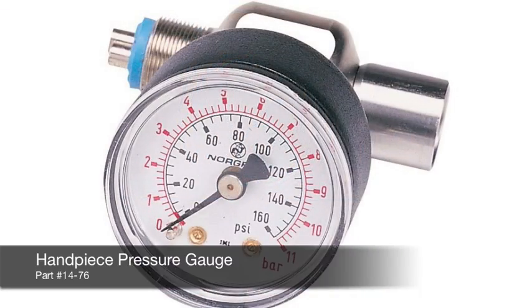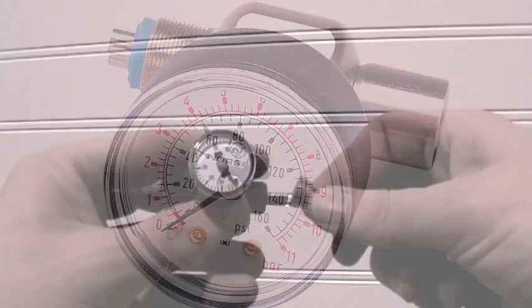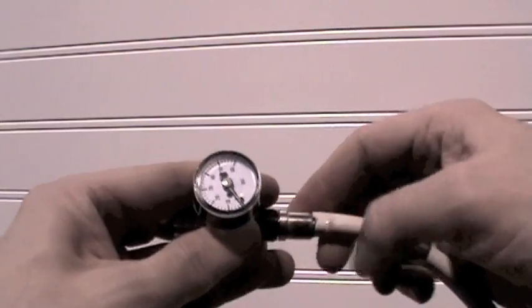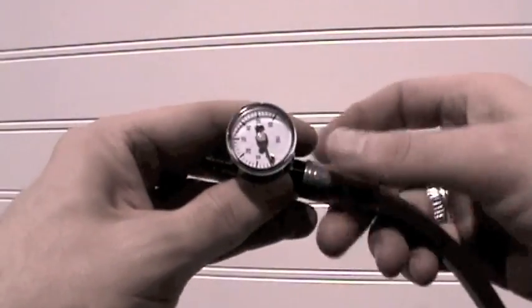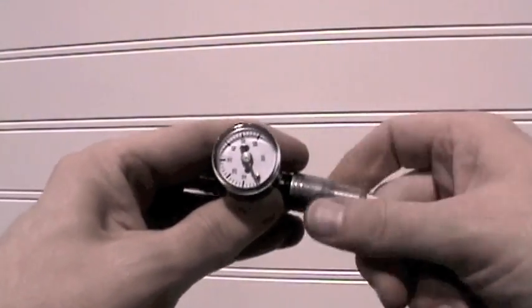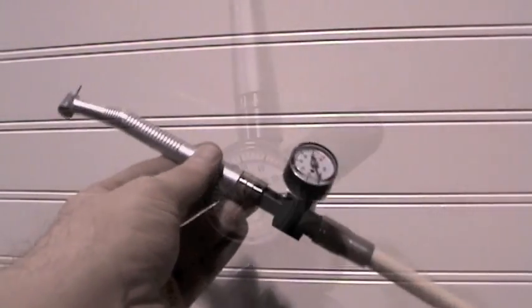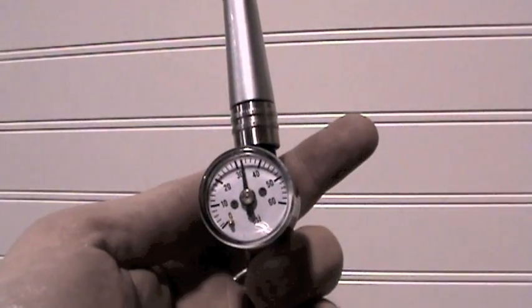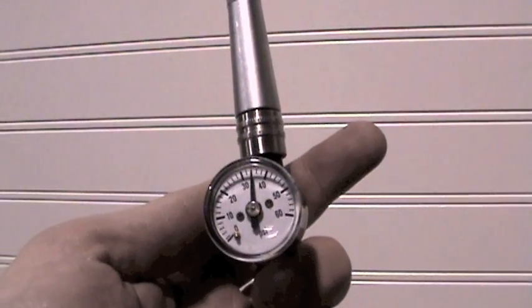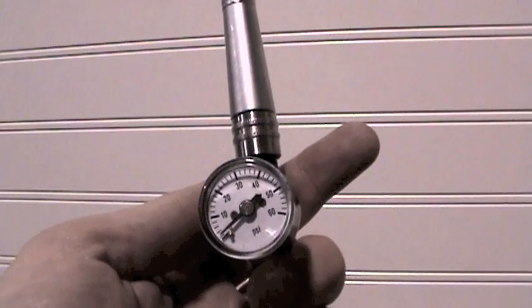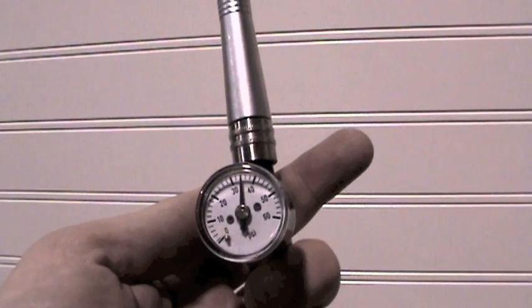In order to verify the pressure that is really coming through the handpiece hose, we suggest using a handpiece pressure gauge. You would use this device to set the correct pressure at your block. As you can see, the gauge on the hose reads about 32 PSI. So we were able to determine no adjustment was needed on the block at this time.